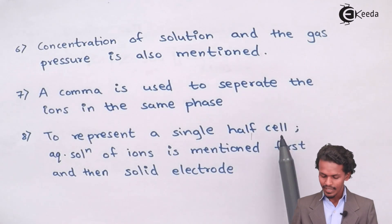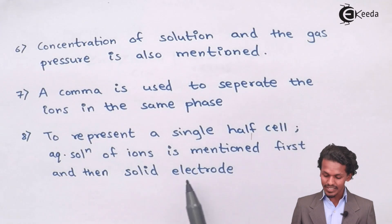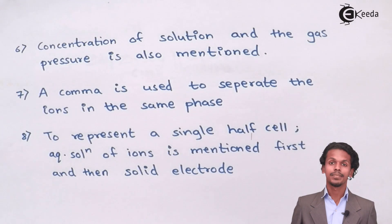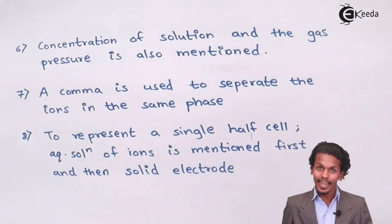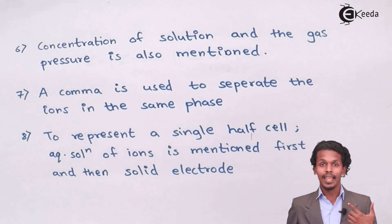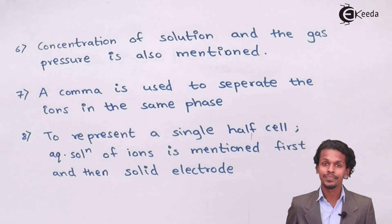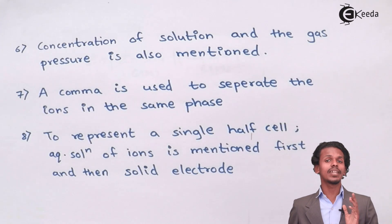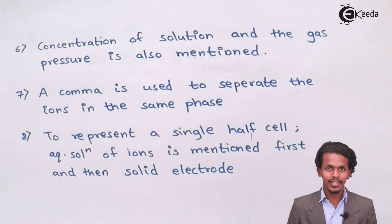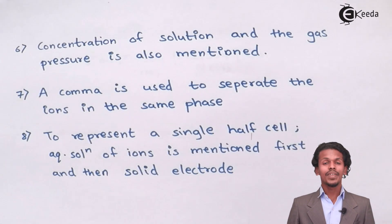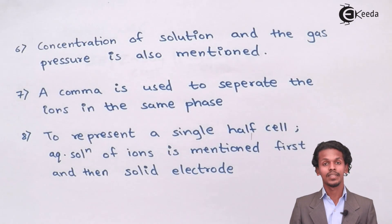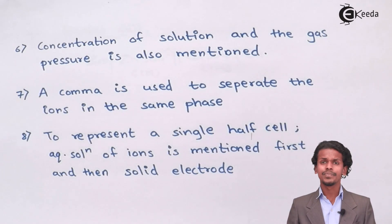To represent a single half cell, the aqueous solution of ions is mentioned first and then the solid electrode is mentioned. A half cell consists of one electrode and the aqueous solution in which the electrode is dipped. When representing a half cell, we write the solution first and then the electrode.